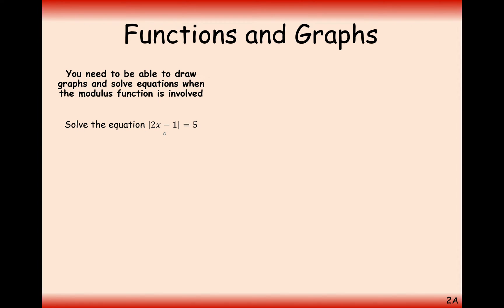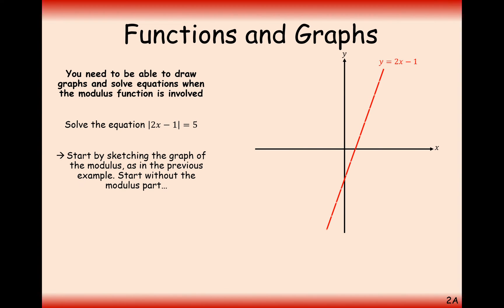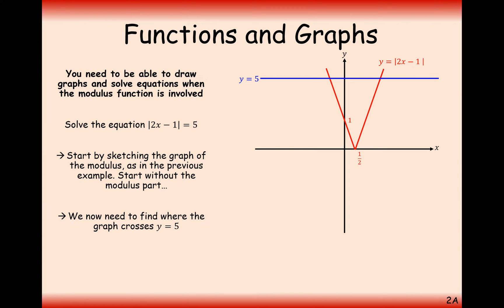The question here is: solve the equation modulus of 2x minus 1 equals 5. We're going to use a sketch of the graph. Draw the 2x minus 1 line, rub out the bottom half with our rubber, and reflect it up to the top — just like this. This is effectively the y equals modulus of 2x minus 1 graph. Now we draw in the graph of y equals 5 to get the intersection points, because solving this equation means finding the intersection points of the two graphs.